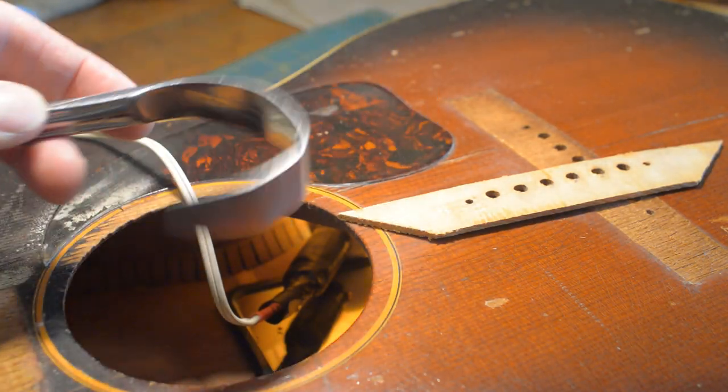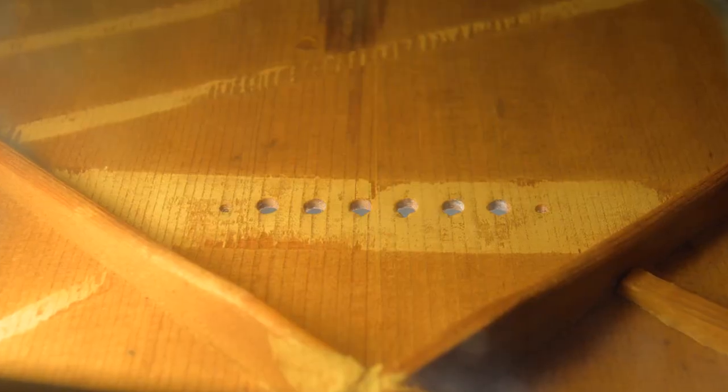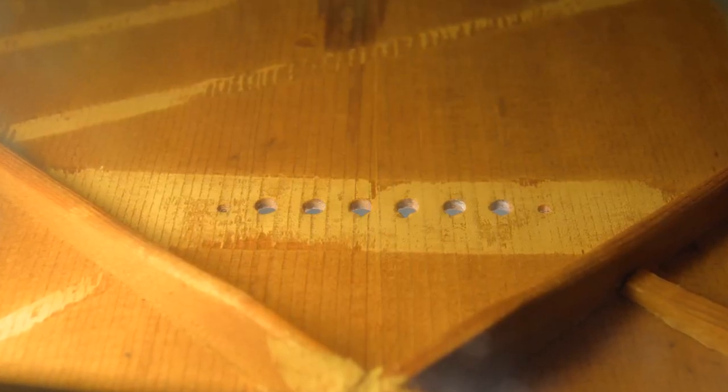I'll put the neck aside for now. I used this bent butter knife to take off the bridge plate. It came off easy with no heat at all. The original glue joint had failed.